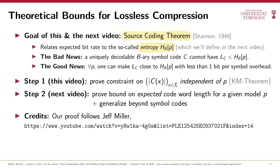I should give credit where credit is due. This video and the next follow quite closely the proof presented by Professor Jeff Miller, which is linked on the slides and in the video description. I wanted to include the proof for completeness, because we'll soon depart from topics covered in Professor Miller's excellent video series. So let's start with step one: we'll prove a constraint on codeword length that holds independently of any symbol probabilities.